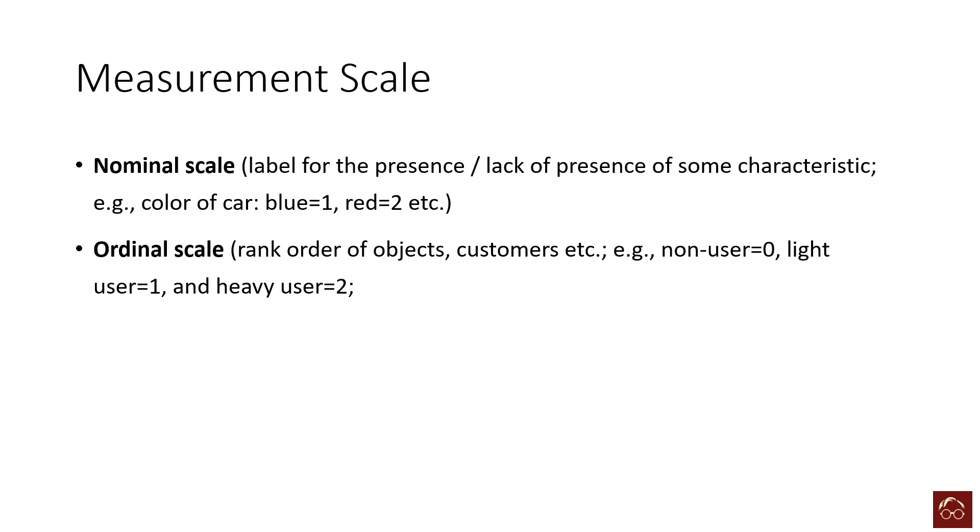We can give zero to non-users, one to light users, and two to heavy users. So we have a rank—the ones with higher levels are using the product more than the ones with lower levels. So here we have a name but also we have a rank. That's the ordinal scale.